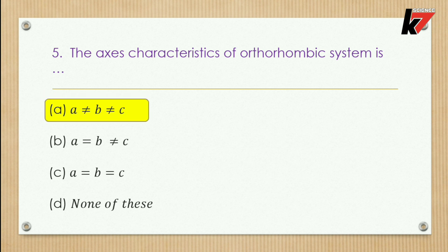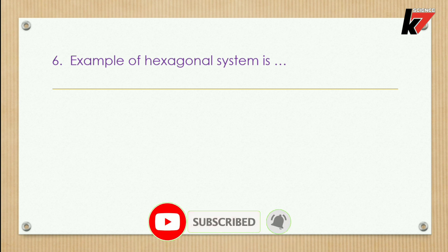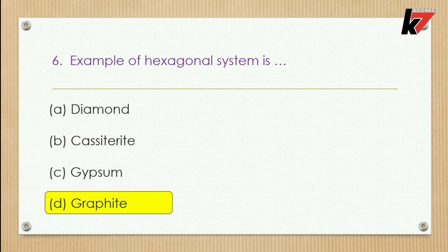Question 6: An example of the hexagonal system — options: diamond, cassiterite, gypsum, or graphite. Diamond is from the cubic system; cassiterite (SnO₂) is from tetragonal; gypsum is from monoclinic; graphite is from hexagonal. So the fourth option, graphite, is correct.